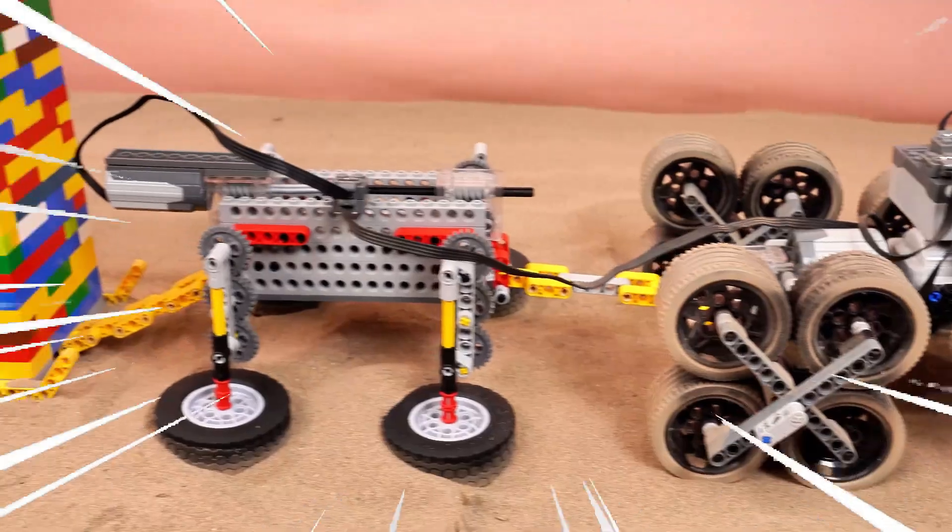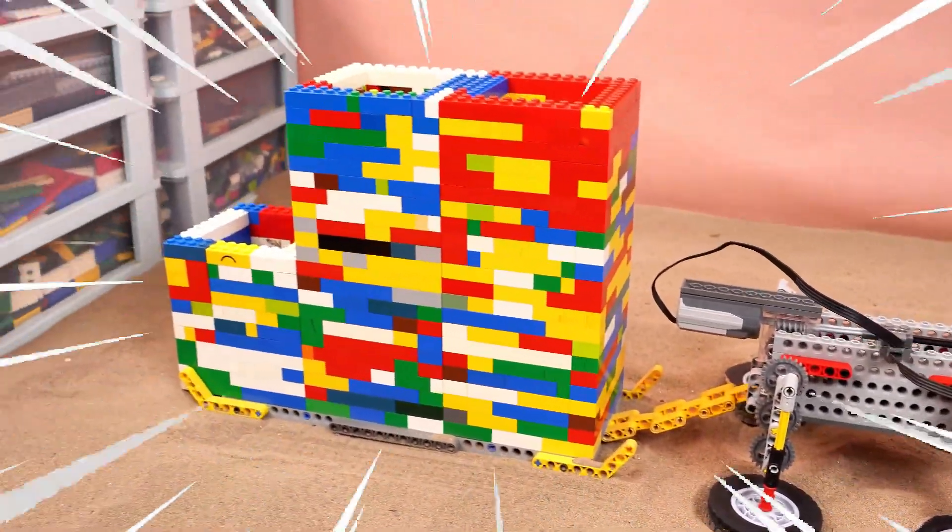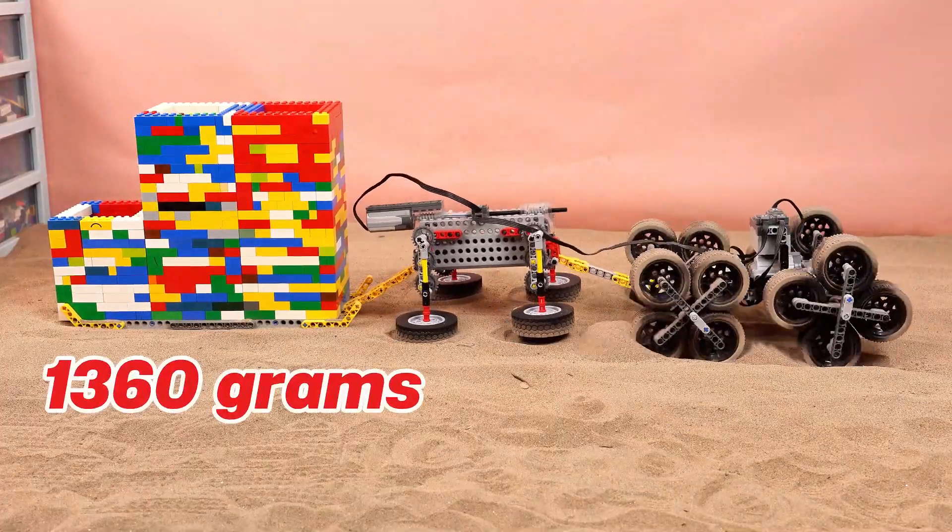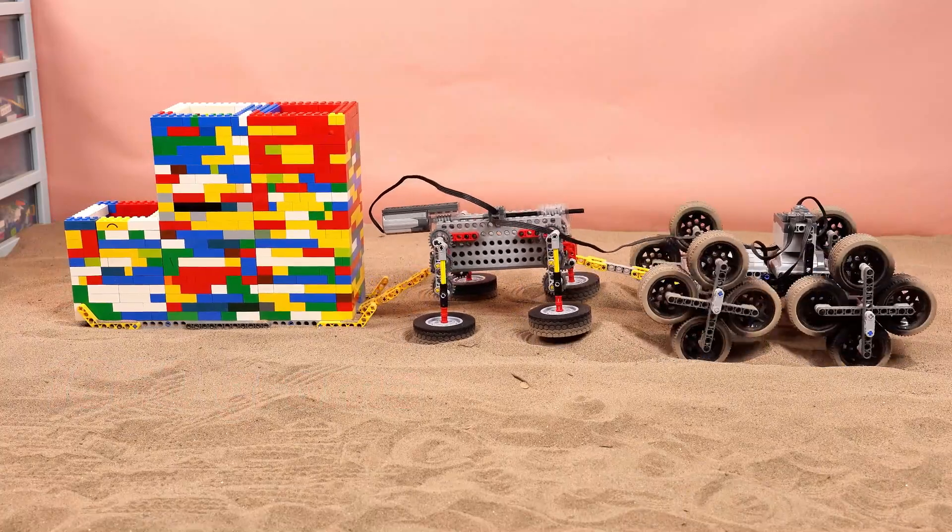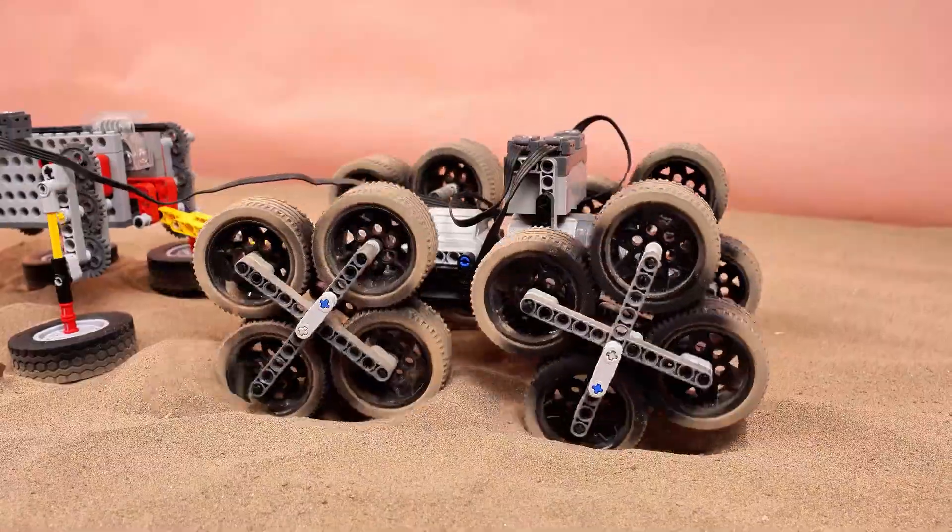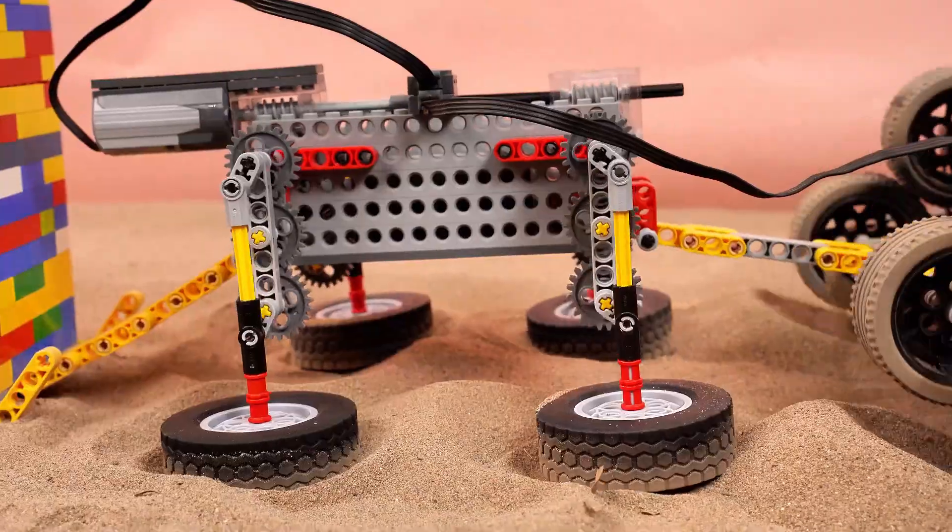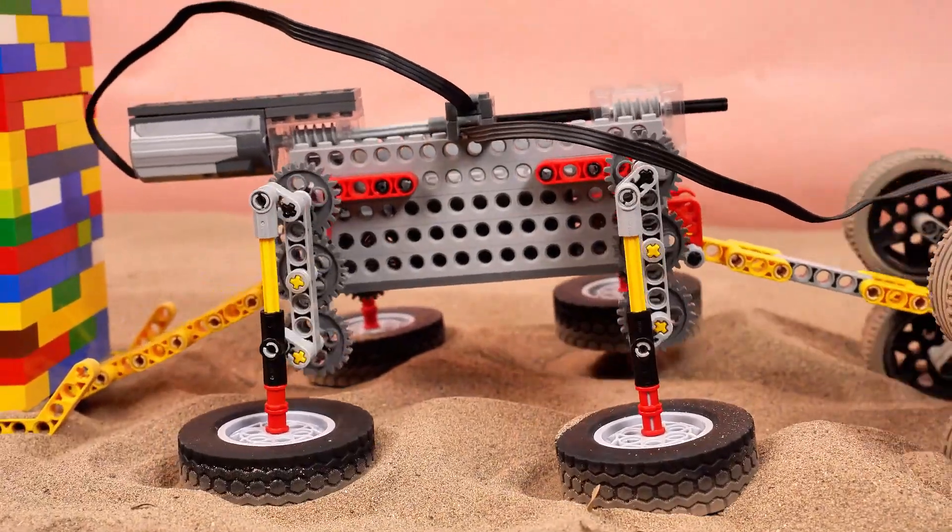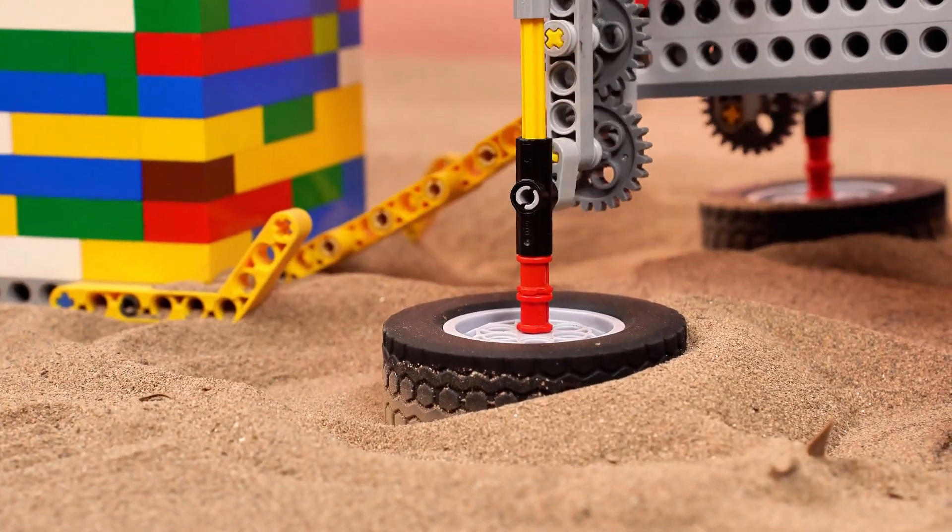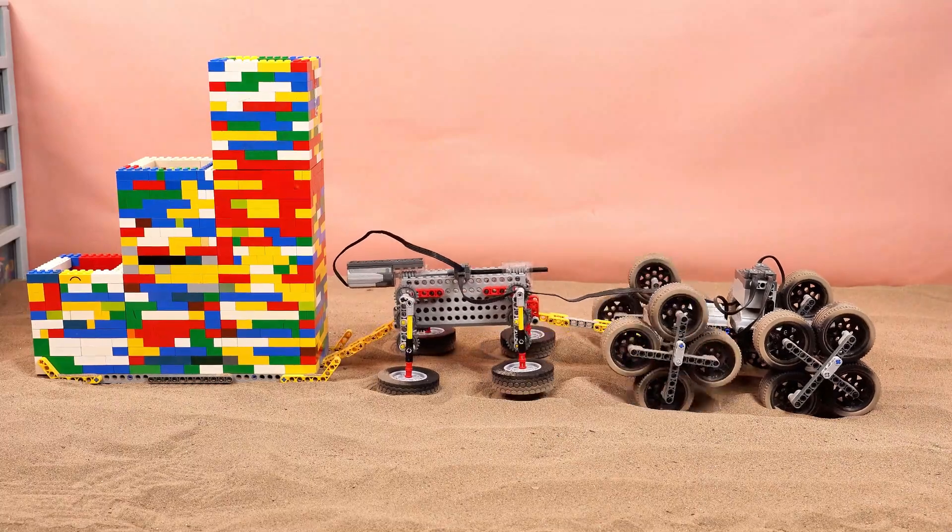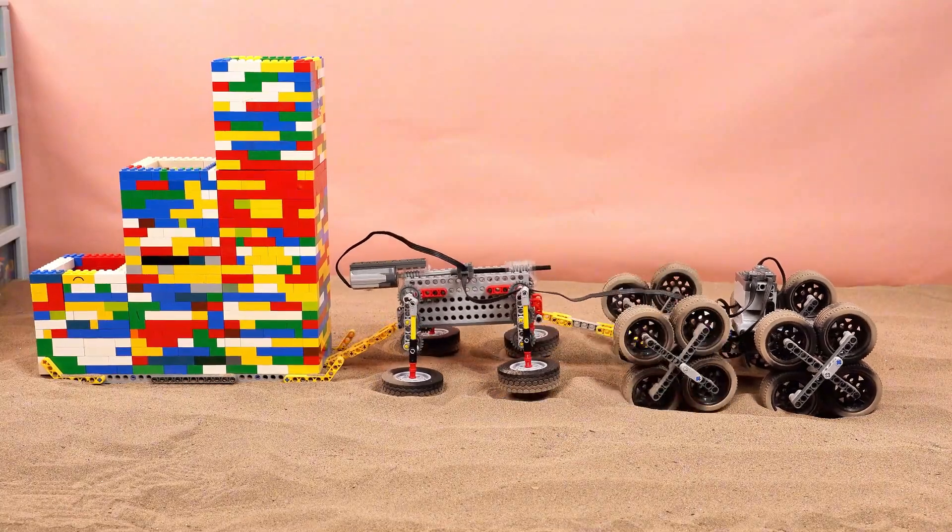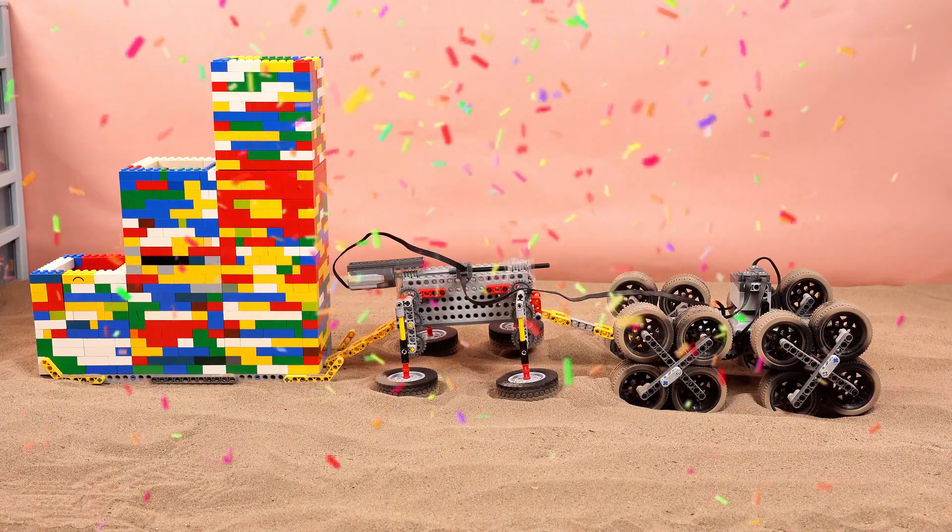All right. Now let's combine the flex rover with the 16-wheel car from earlier. Starting with five blocks right away. Look at it go. It's moving forward. A bit of a struggle. But it still conquered the challenge.